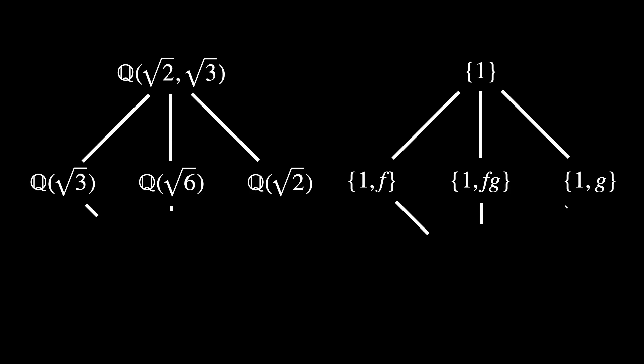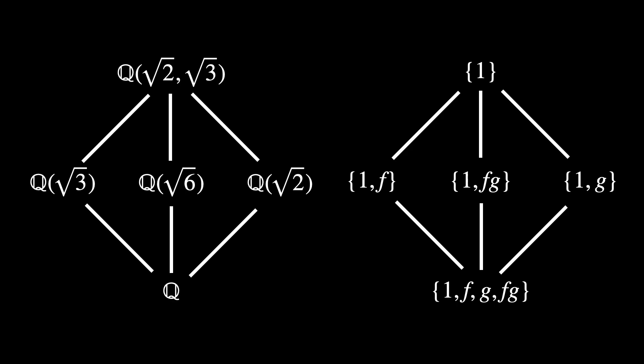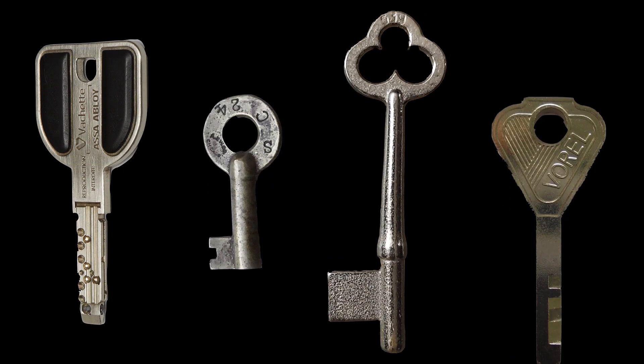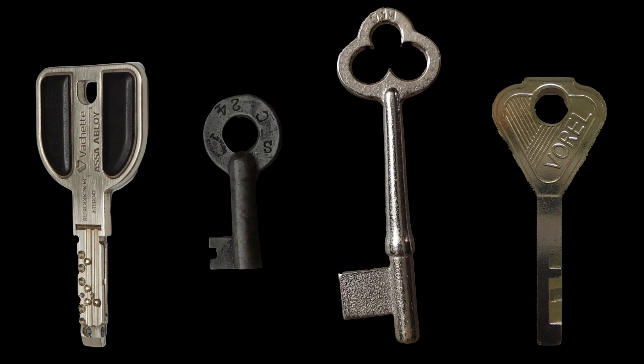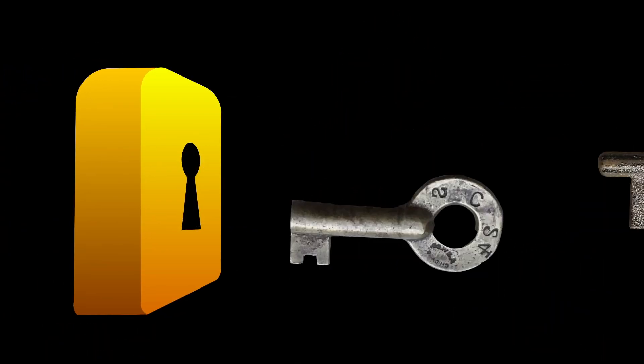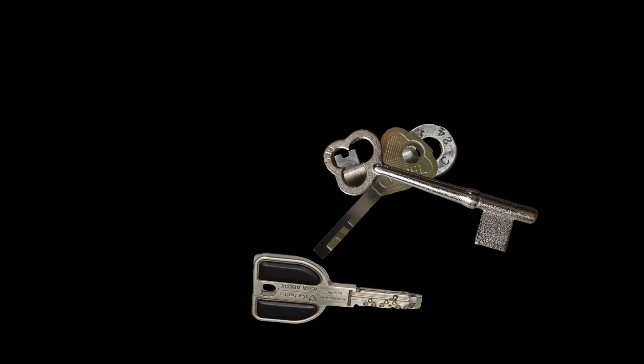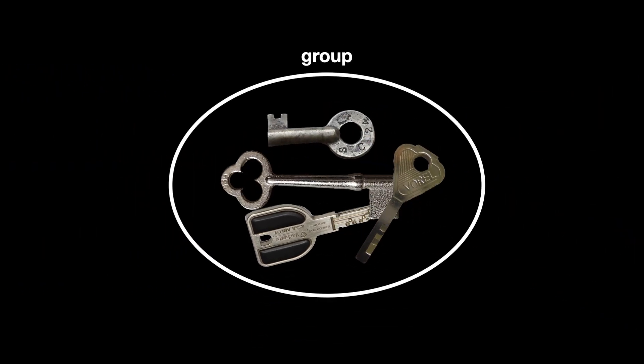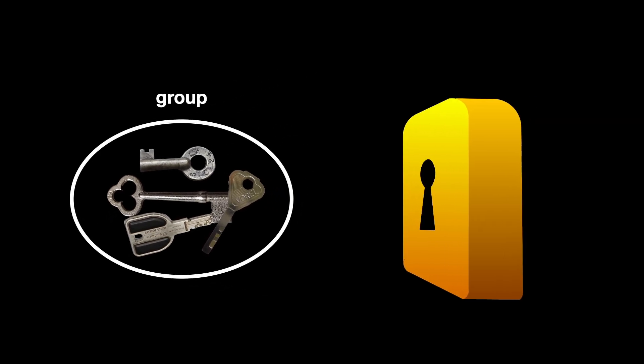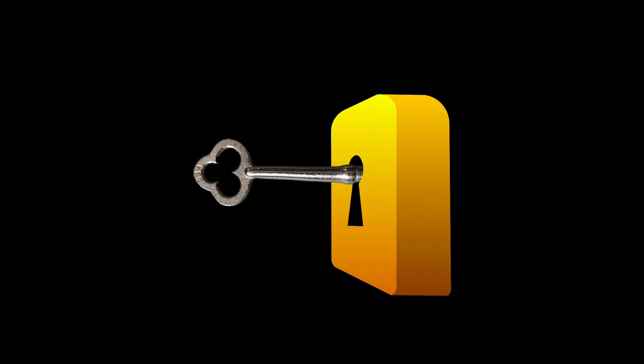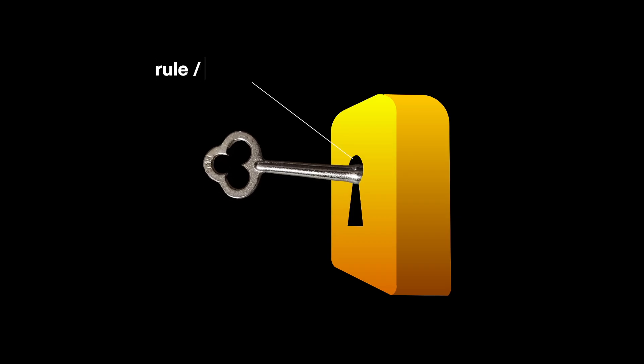These groups described symmetries in the roots of polynomial equations, revealing that their solvability could be understood in terms of group operations. Imagine you have a set of objects like a collection of differently shaped keys. Group theory examines how these objects interact through specific operations, like fitting them into locks. The group consists of all these keys, and the operation is trying to fit a key into a lock. The structure and rules for which keys fit which locks is what group theory wants to understand.